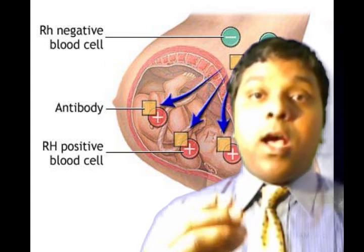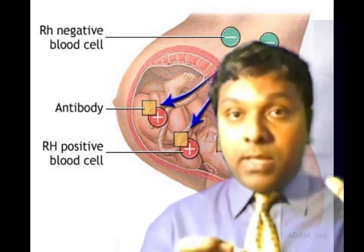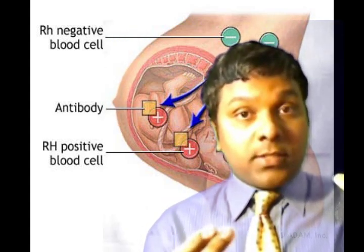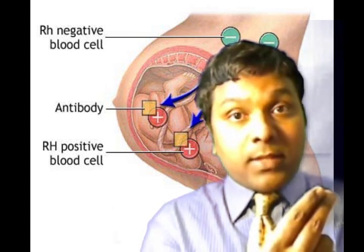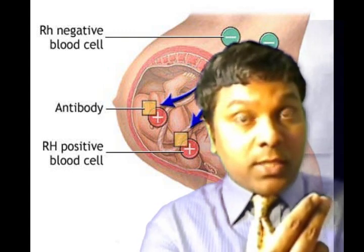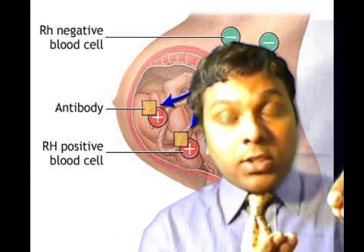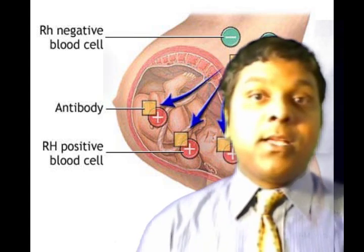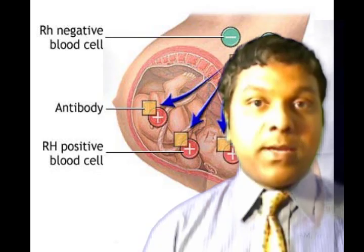In summary: RH incompatibility occurs when the mother is RH negative and the baby is RH positive. The baby's RH positive blood cells enter the mother's circulation; the mother treats these fetal red blood cells as foreign bodies and produces antibodies. Those antibodies cross the placenta into the fetus, causing anemia and, in many cases, death. That is the essence of RH incompatibility.